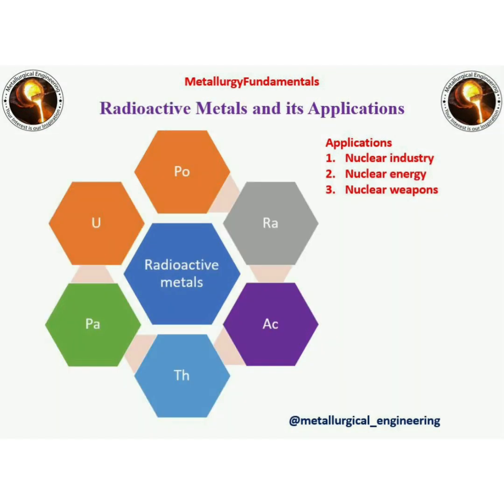Radioactive metals are uranium and thorium, mainly used in nuclear reactors for producing electricity.